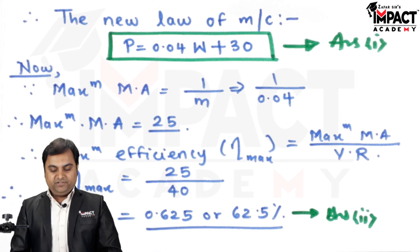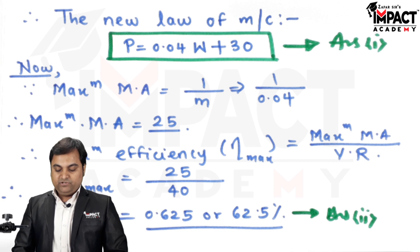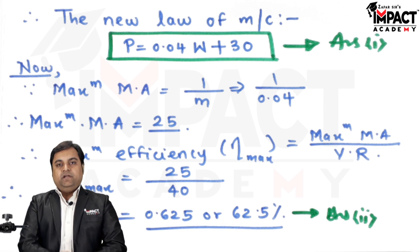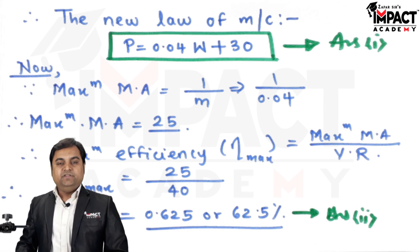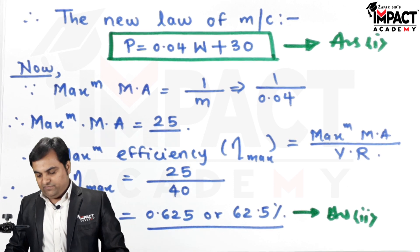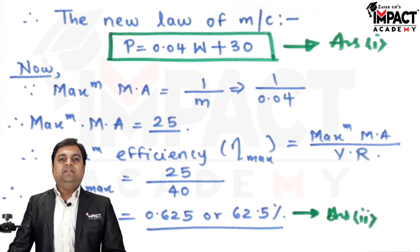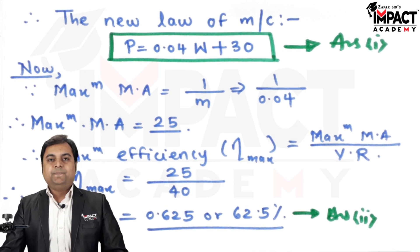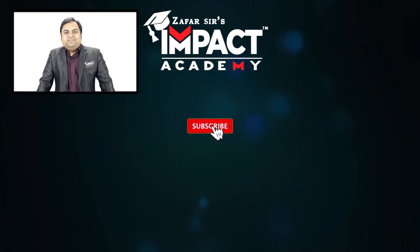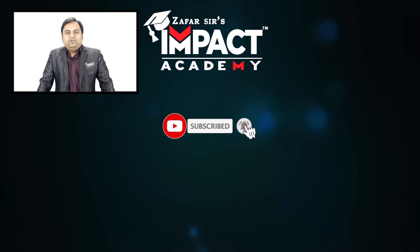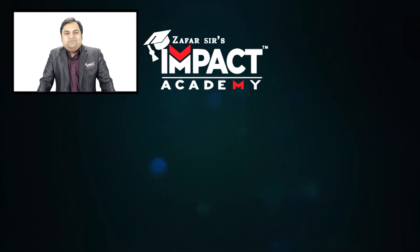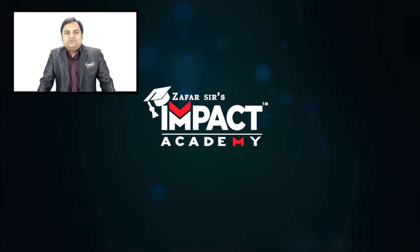Also, we can say that since this efficiency is greater than 50 percent, the machine given in the problem is a reversible machine that is capable of doing work in the reverse direction. That was a simple problem regarding the law of machine and maximum efficiency. If you find my videos helpful, you can like, share, comment, and subscribe to our channel. Thanks for watching.